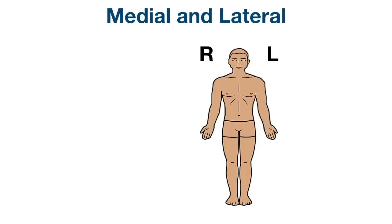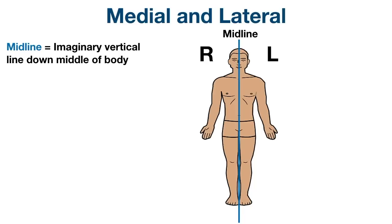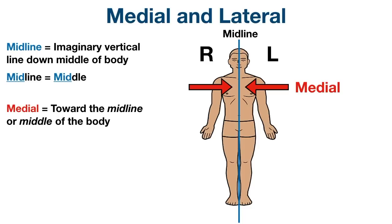The first pair of directional terms is medial and lateral. To better understand medial and lateral, let's divide the body into right and left sections using a sagittal plane. The sagittal plane runs vertically front to back and divides the body into right and left sections. The line shown represents the midline of the body — an imaginary vertical line down the middle that divides the body into equal right and left sections. The easy way to remember midline is to think of midline and middle. If we move toward the midline of the body, then we're moving medial. Medial is defined as toward the midline or middle of the body.